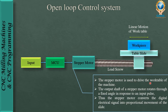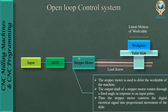The stepper motor is used to drive the work table of the machine. The output shaft of the stepper motor rotates through a fixed angle in response to an input pulse. Thus the stepper motor converts the digital electrical signal into a proportional mechanical movement of the slide.